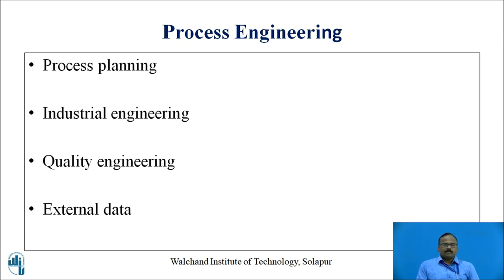Now let us see what is Process Planning. For an organization to manufacture a product that meets the design specifications, the manufacture of each component part must be thoroughly planned. The manufacture of the product must be cost-effective, with added value, and completed on time. Through process planning, the manufacturing engineer is responsible for ensuring the product is manufactured to the correct specifications, at the lowest possible cost, and completed on time.